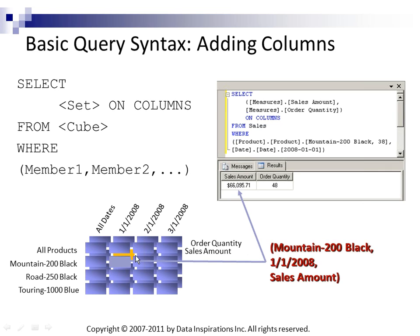At that point, it's able to go and retrieve the value from the cube. The point here is that each of those cells then becomes a separate tuple. So order quantity here becomes 100200 black, the 112008 order quantity, and so forth.